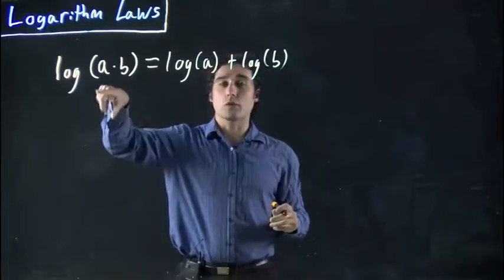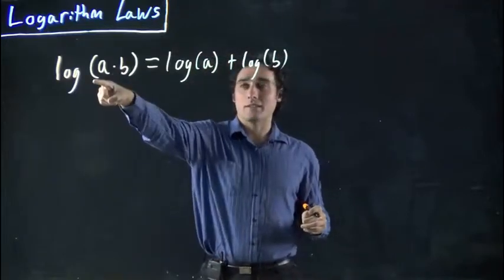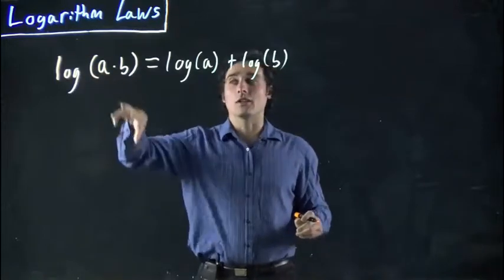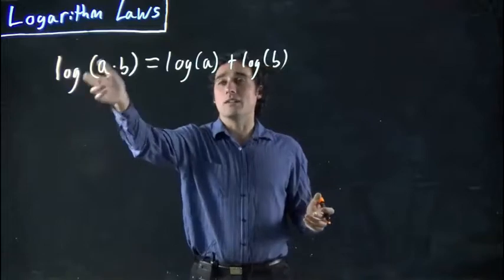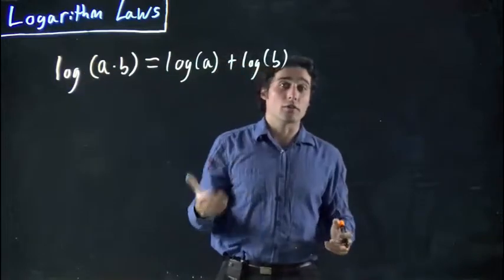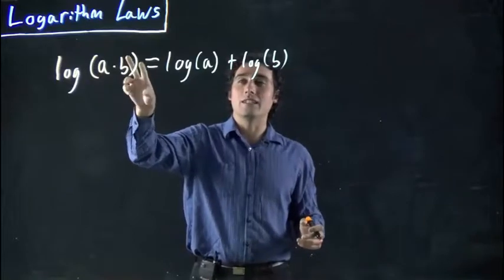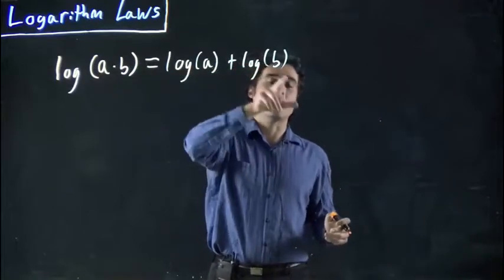Again, this would apply to any base. If I had log to the base 10, if I had log to the base 3, log to the base e or ln, this rule would still apply for all of those cases. It would just be the same base. So ln of a times b would be split to ln of a plus ln of b.